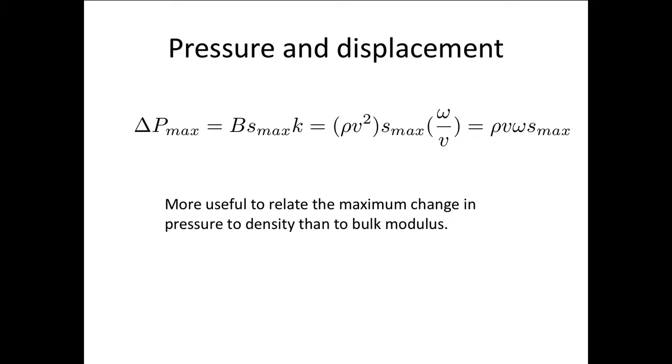OK, so let's have a look at how pressure and displacement are related. We can consider the maximum values. So we've said that the change in the pressure is equal to b k s max sine k x minus omega t. Now, the maximum value for this is going to be when this is equal to 1. So the maximum pressure differential will be b k s max.